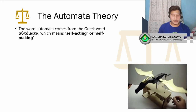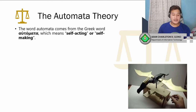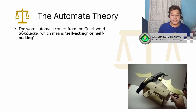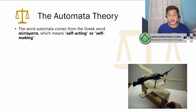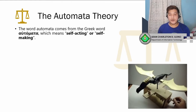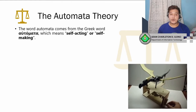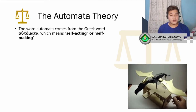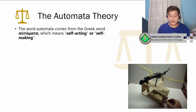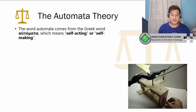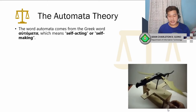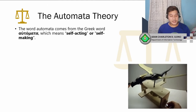The word automata comes from a Greek word meaning self-acting or self-making. It is typically a machine that has a set of rules in it, and when it runs, it does what it is asked to do. A good example is a mechanical toy dragon that flaps its wings and wags its tail as a spindle is spun — one of the best examples of automata.